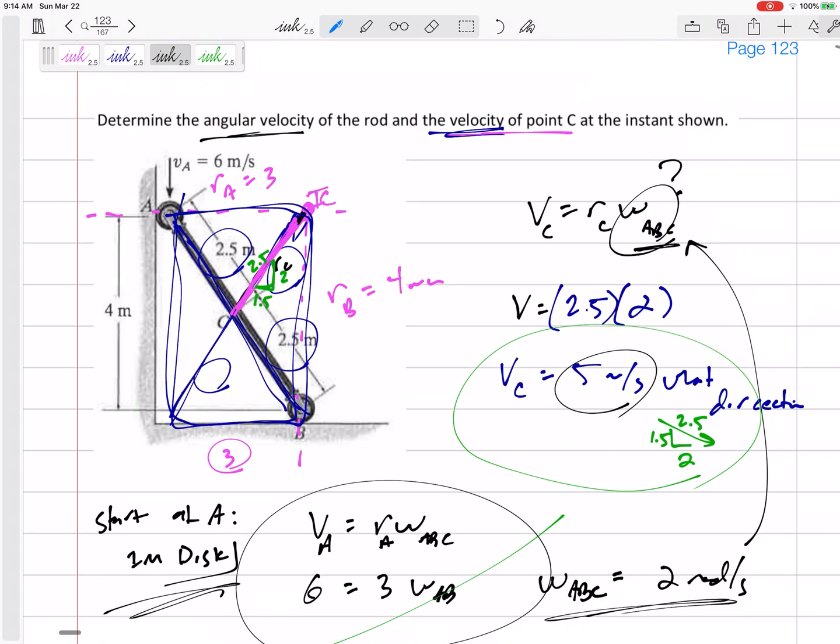And once I had that, then I can find any point, any other point. So instead of going to b, I went to c.